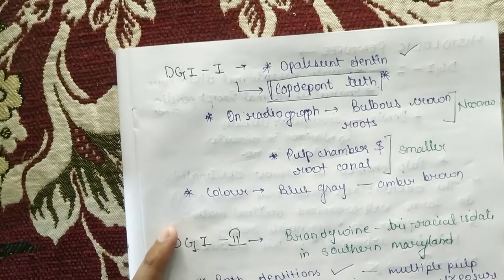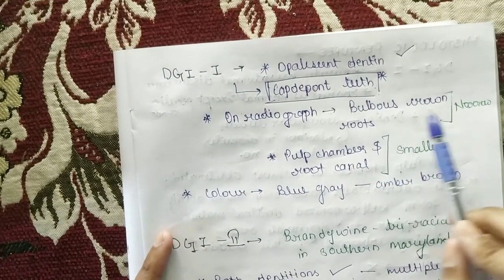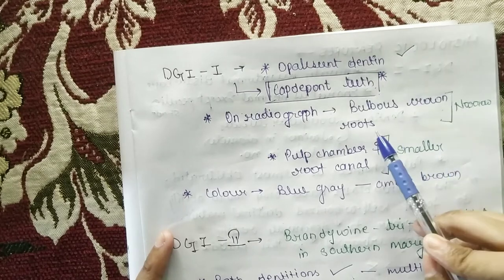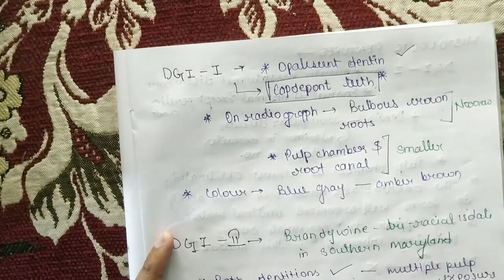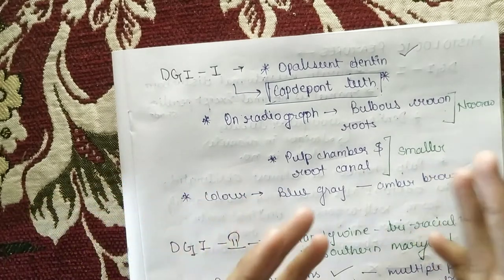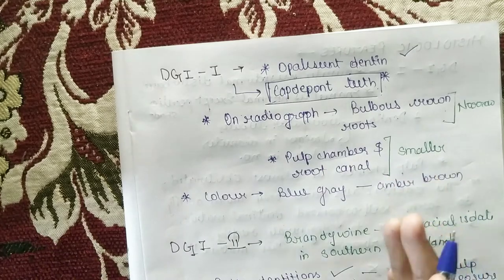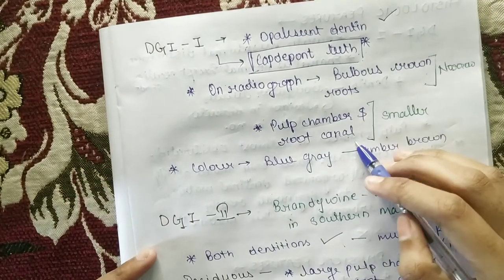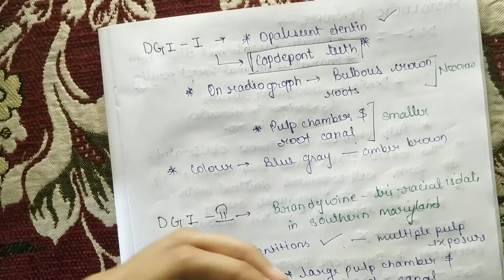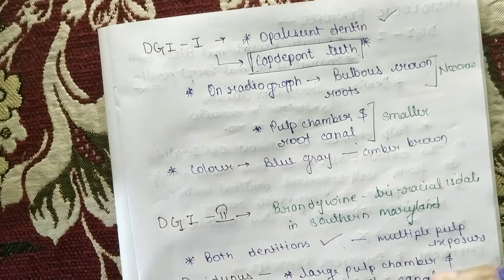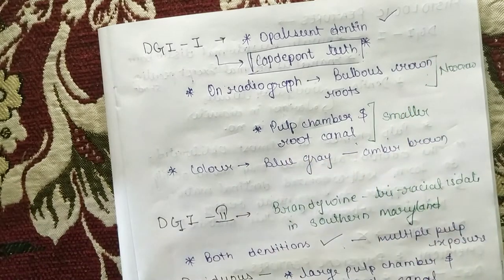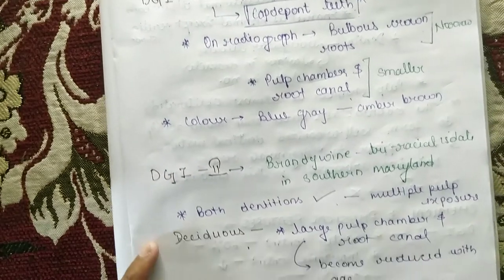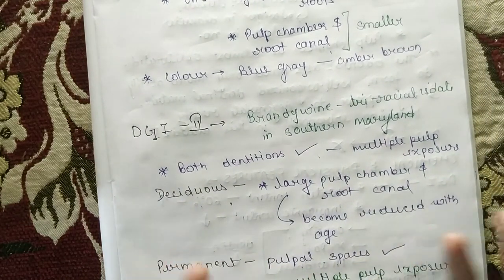On radiograph you will see bulbous crowns, roots will be very narrow. The pulp chamber and root canal will be smaller than normal — smaller compared to a normal pulp chamber and root canal. Regarding color, it will vary from blue-grey to amber-brown.